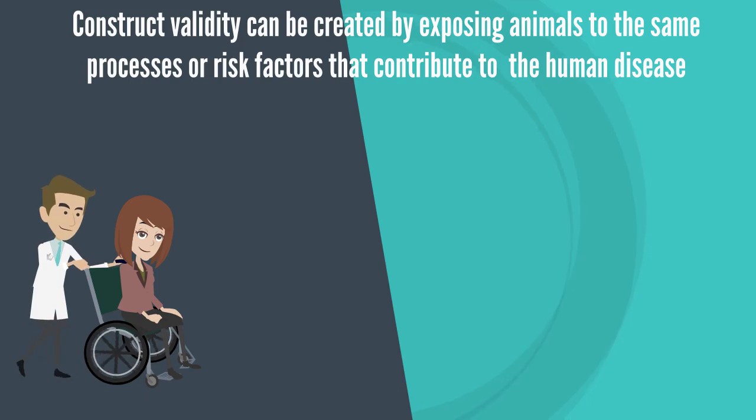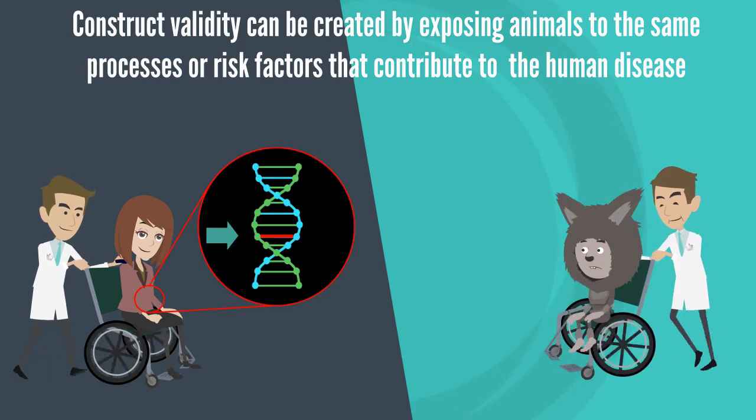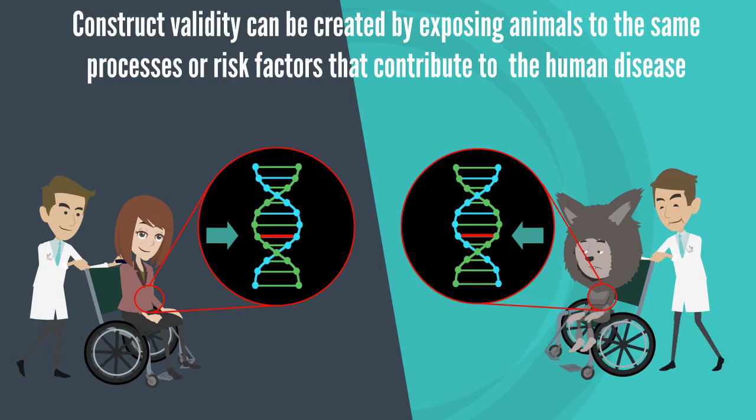For example, Huntington's disease is caused by a mutation in the Huntington gene. So an animal model of Huntington's disease with good construct validity will be generated by genetically engineering the animals to have this mutation in their Huntington gene.